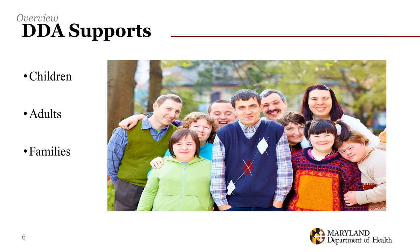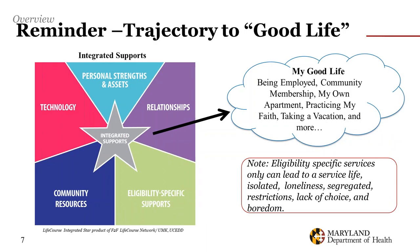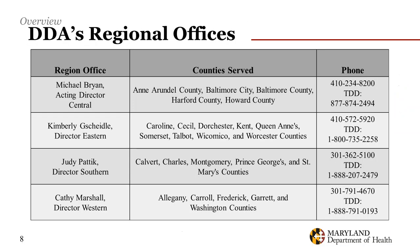The DDA supports children and adults with developmental disabilities and their families. Before considering the various services and supports available under the DDA waiver programs, it is essential to first consider the goals to support the person's vision of what is a good life. The DDA has four regional offices located across the state, including the director, the counties served, and their contact phone numbers.